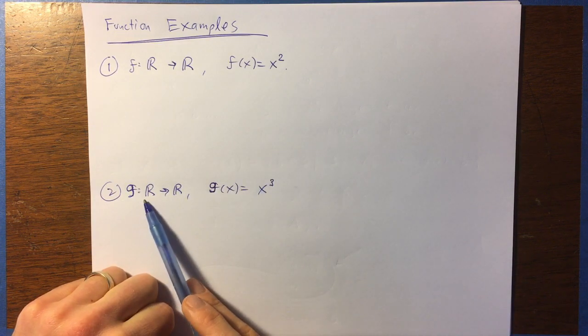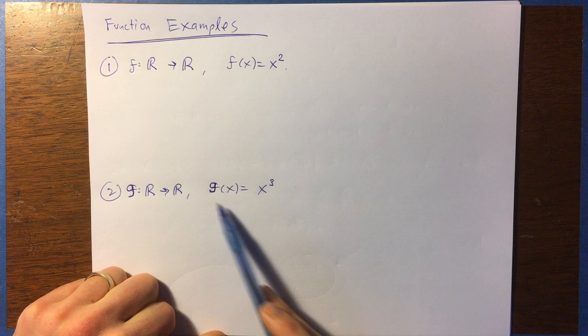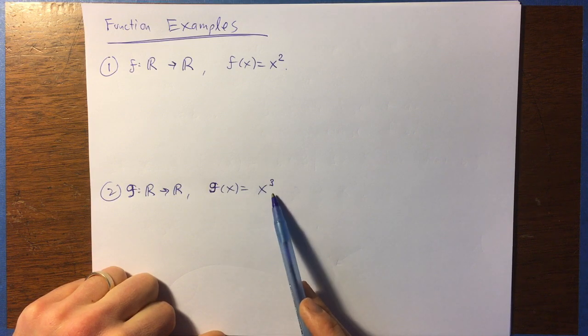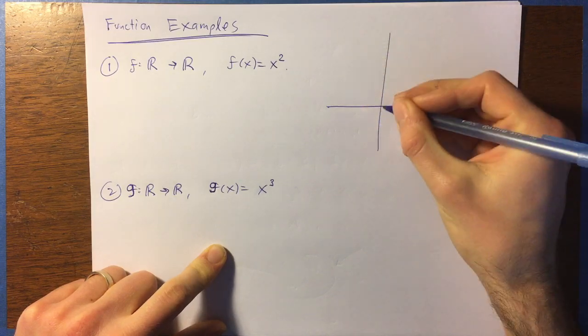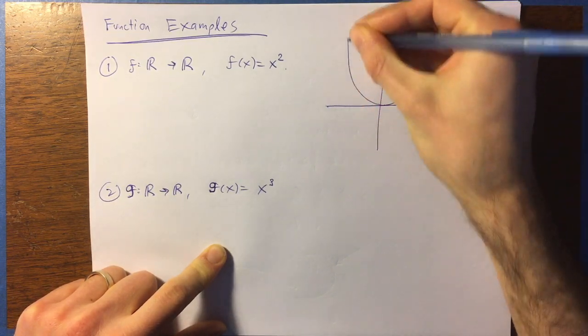Now the function g is also a map from the real numbers to the real numbers, but this one is defined by g of x equals x cubed. All right, well, these are familiar functions, right?